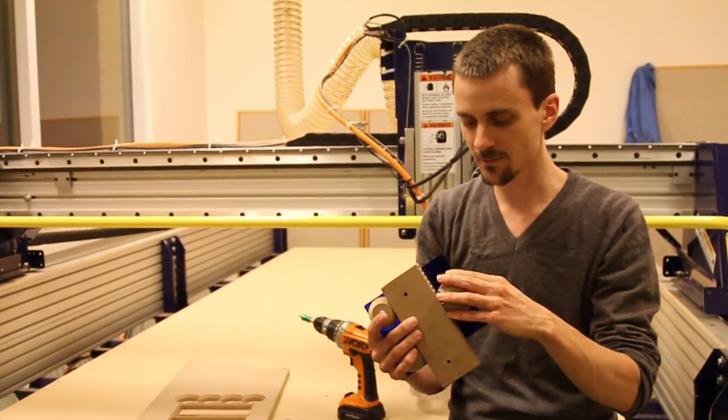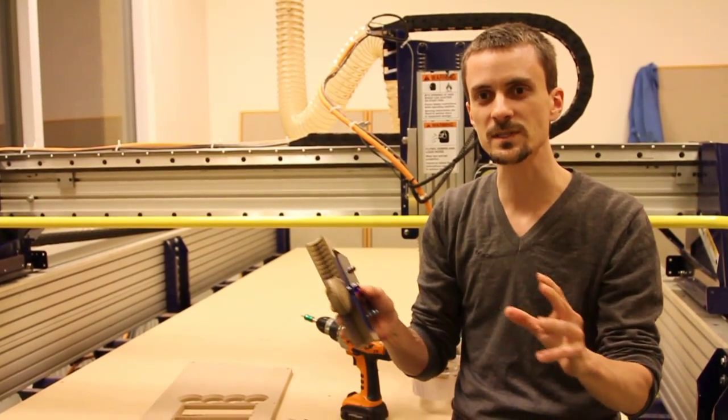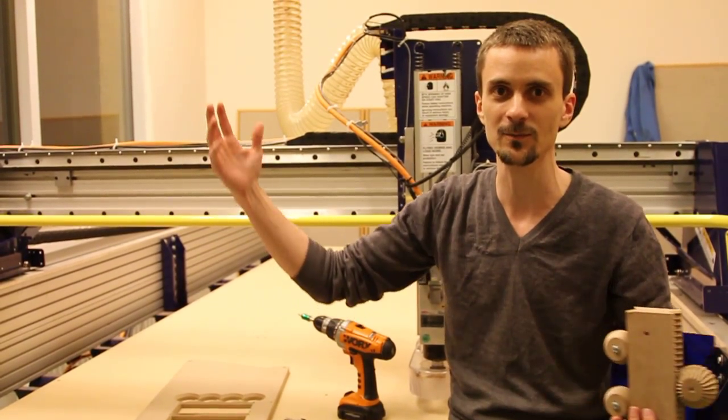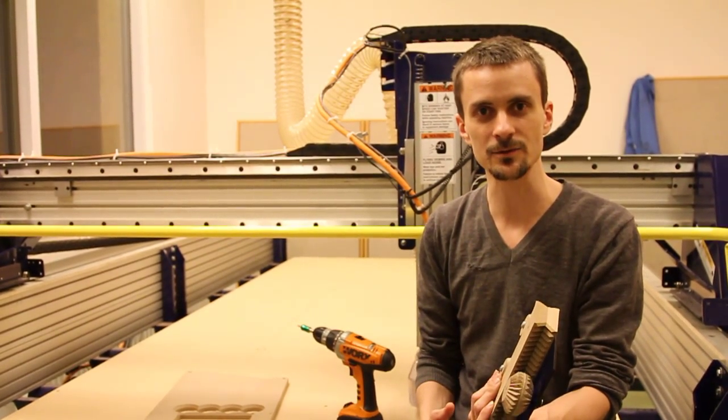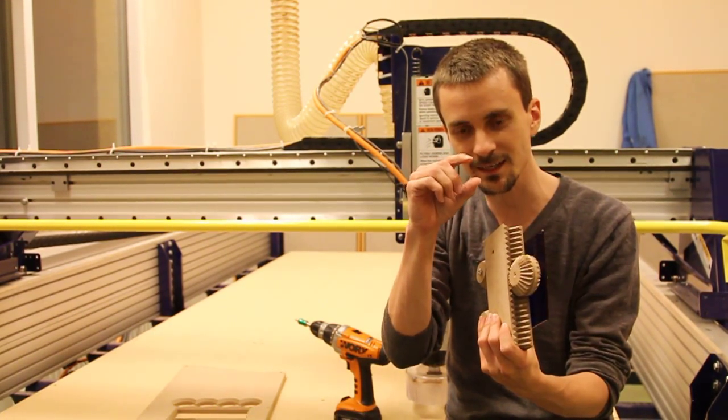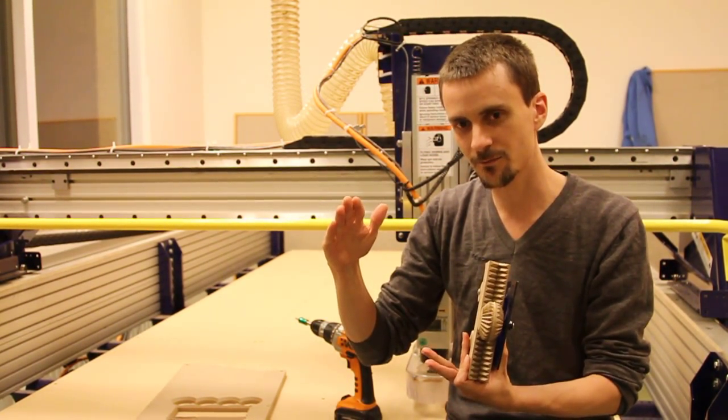Rack and pinion here is really interesting as a drive system because it's super scalable. This is really rough and big but it could be even bigger and we can make a machine as big as a house. Or if you want to work super precise, we can mill this really tiny and small and make really precise machines.